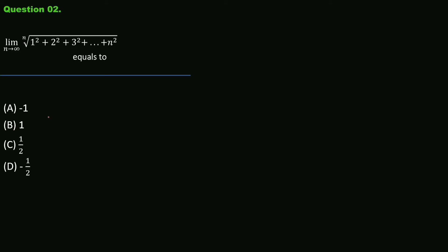Question number 2: find the limit as n tends to infinity of the nth root of (1² + 2² + 3² + ... + n²). The options are -1, 1, 1/2, and -1/2. Option B is correct.